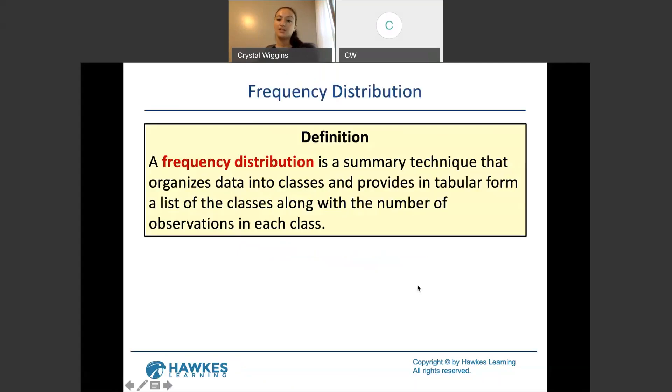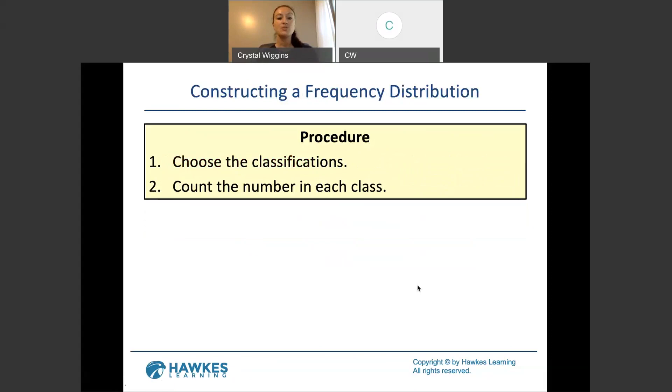A frequency distribution is a summary technique that organizes data into classes and provides in tabular form a list of the classes along with the number of observations in each class. So really, we're just listing each category and the counts of which are applied to each category and then we can continue to do other types of calculations that are helpful to analyzing the data. The procedure would be to choose the classifications or list the categories and then count the number in each one of those classes.